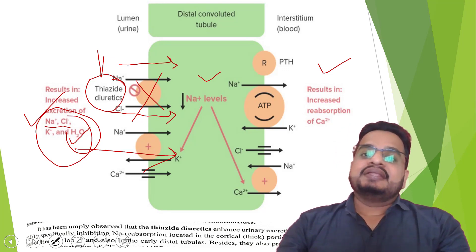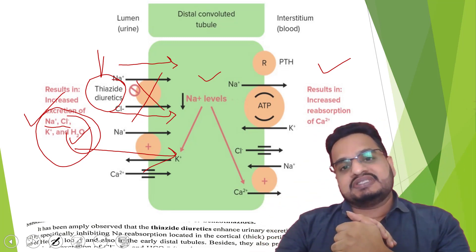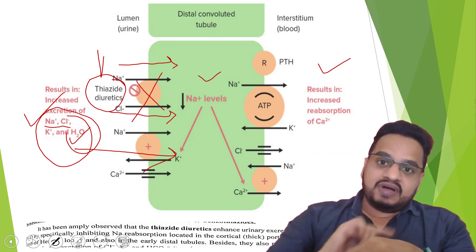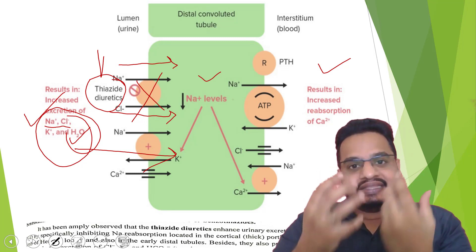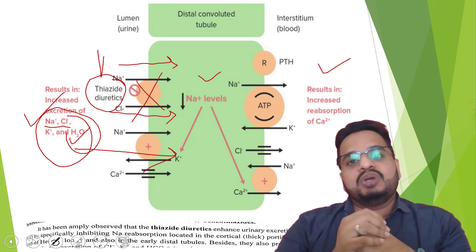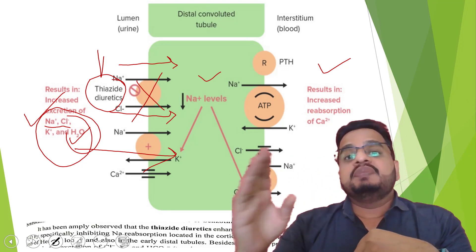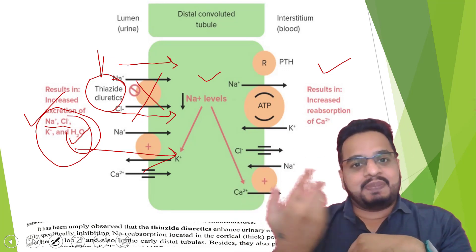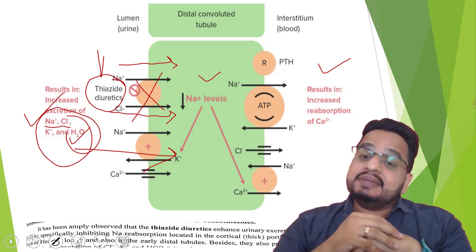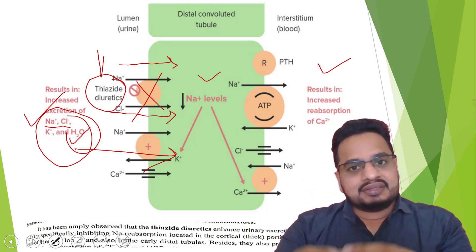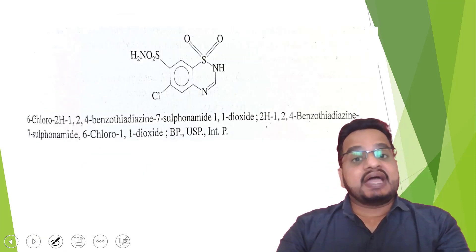As the sodium and chlorine reabsorption channel is blocked by thiazide diuretics in the thicker portion of the ascending part of the loop of Henle, sodium and chlorine concentration in the lumen increases. To excrete the sodium and chlorine, a large amount of water will also remain in the lumen. This water will not be reabsorbed into the interstitial part through the nephron tubule cells, ultimately leading to the loss of water — that is, excretion of a large amount of water. This is the mechanism for thiazide diuretics.